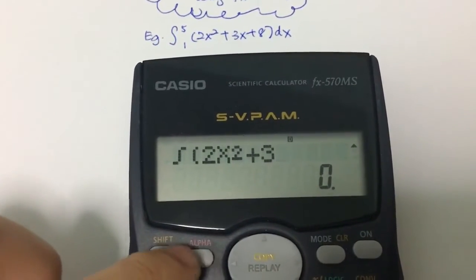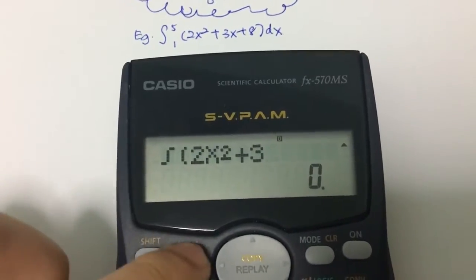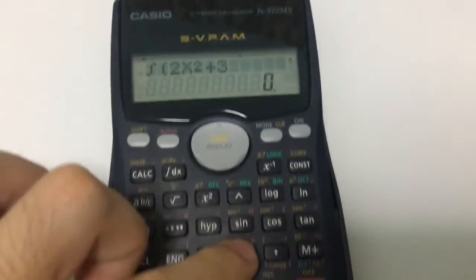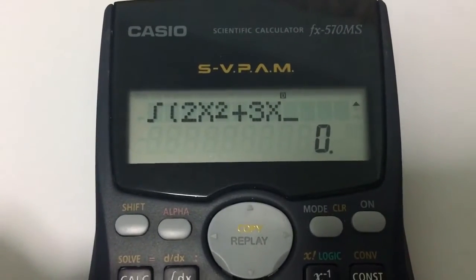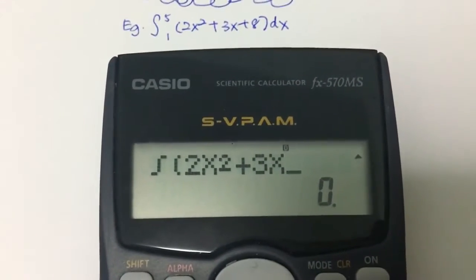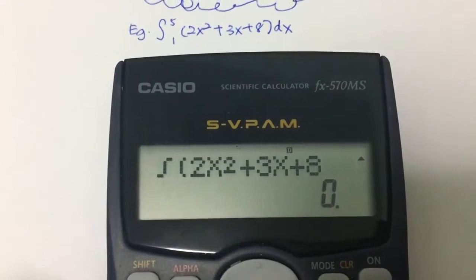To include the x, key in the x. You have to press alpha and then this x button here. And after which, you have to plus 8. Next thing that you have to do...